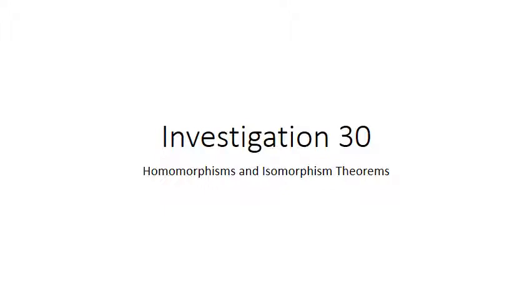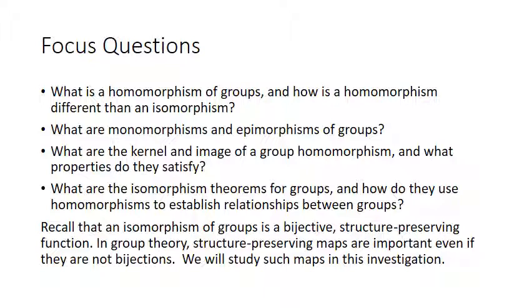Let's start Investigation 30: homomorphisms and isomorphism theorems. Homomorphisms are a really important technique for finding out different things about groups. Focus questions: What is a homomorphism and how is it different from an isomorphism? What are monomorphisms and epimorphisms? What are the kernel and image of a group homomorphism and what properties do they satisfy? What are the isomorphism theorems and how do they use homomorphisms to establish relationships between groups? Recall that an isomorphism is a bijective structure-preserving function. In group theory, structure-preserving maps are important even when they're not bijections.